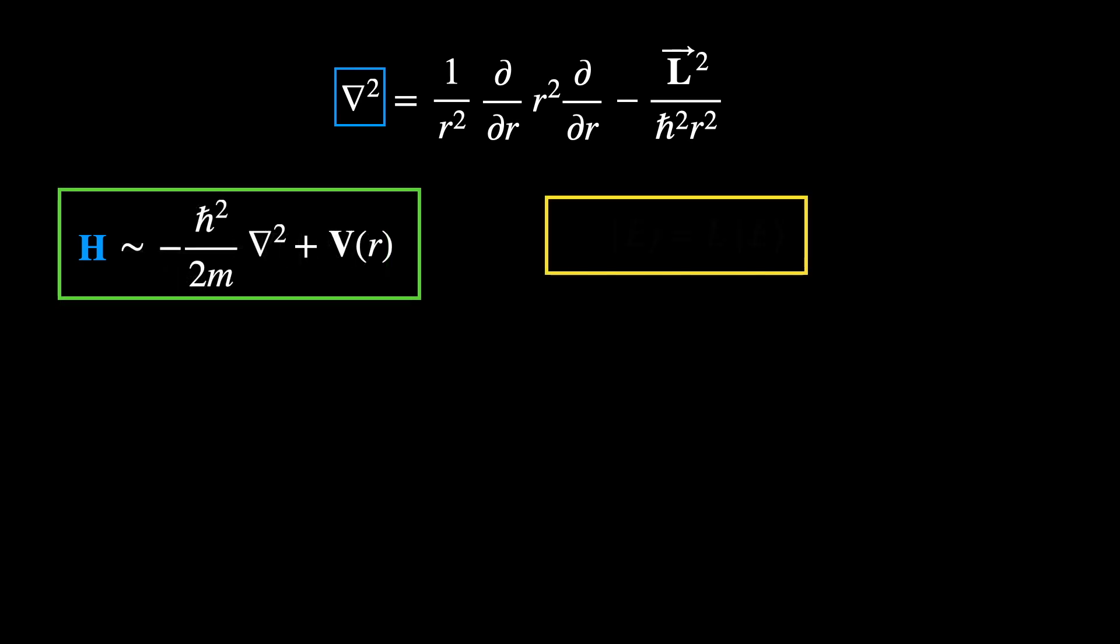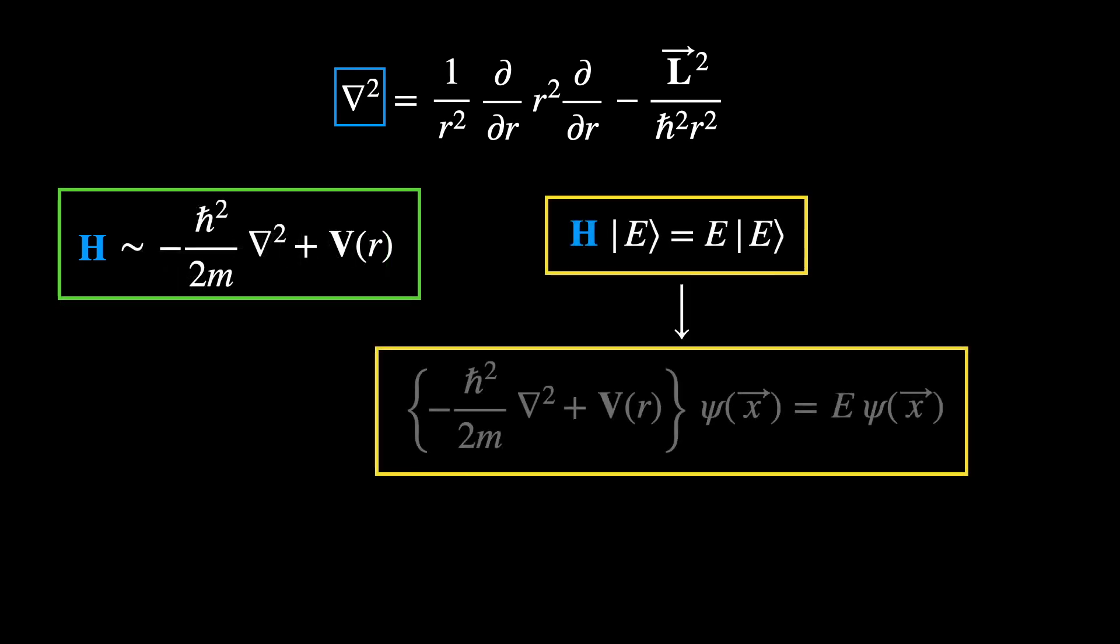Let's plug this back into the Hamiltonian. This form of H comes from the position space representation of the eigenvector equation, where the energy eigenfunction, which is the position space representation of the energy state, is given by psi.